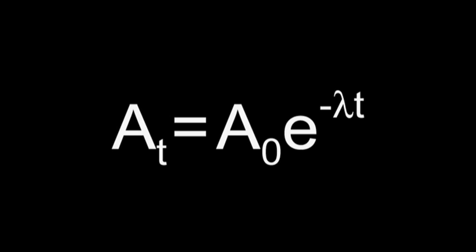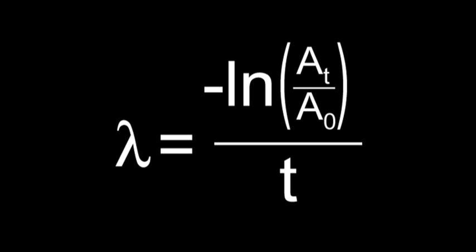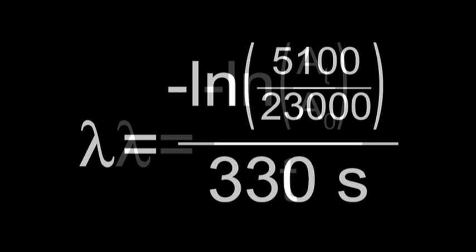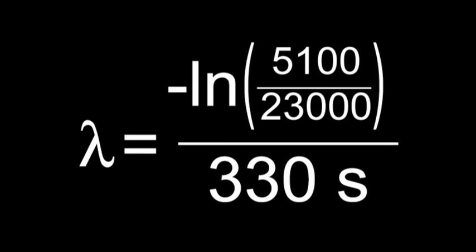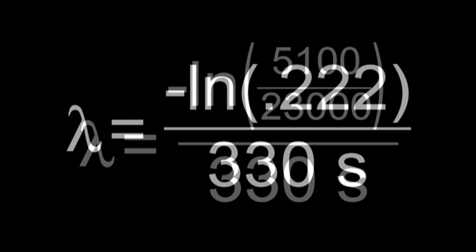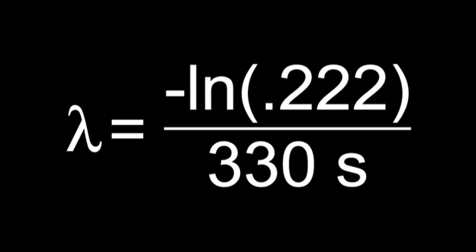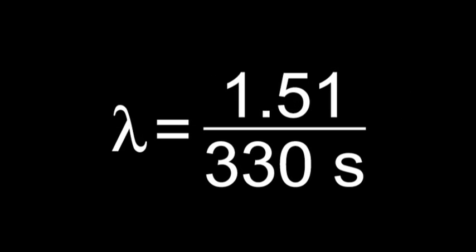But this is what you should get. Just fill in the appropriate values. Do the division within the parentheses and take the natural log of that number. And finally, divide by the time. At last, we've found the decay constant.